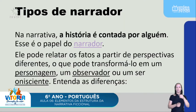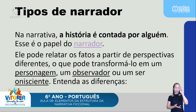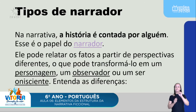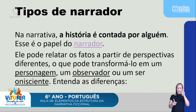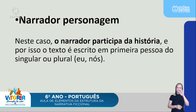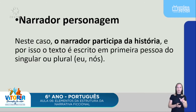Tipos de narrador. Na narrativa, a história é contada por alguém — é o narrador. Ele pode relatar os fatos a partir de diferentes perspectivas. Temos o narrador personagem, o observador e o onisciente. O narrador personagem participa da história: quando o texto é narrado em primeira pessoa — 'eu' ou 'nós' — temos ali o tipo de narrador personagem.